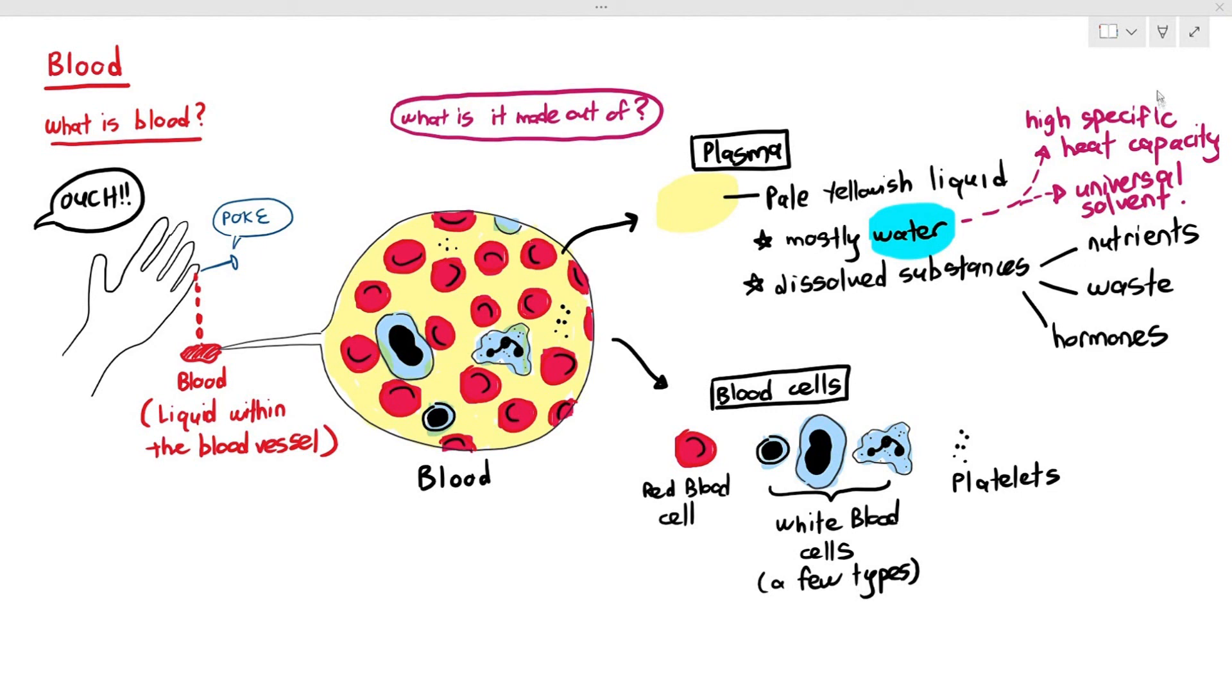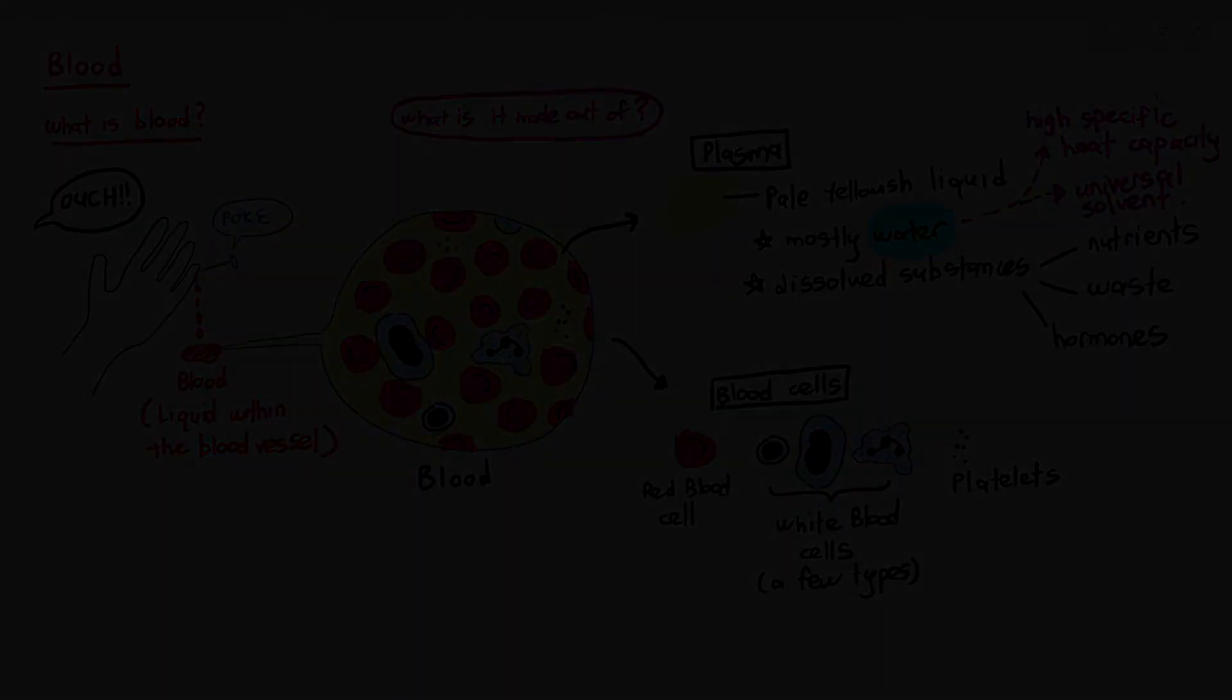So, blood, which is this liquid in our blood vessel, is actually split into two things, plasma and blood cells. And under the blood cells, in the next video, we are going to be looking at the red blood cells.